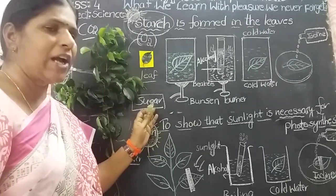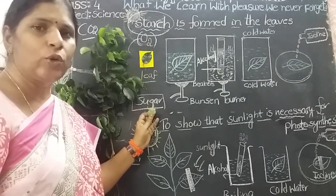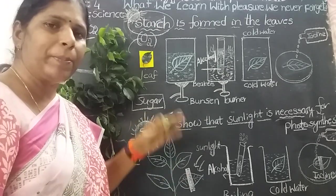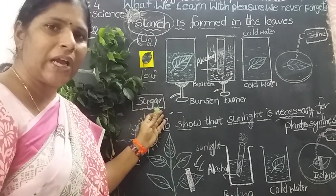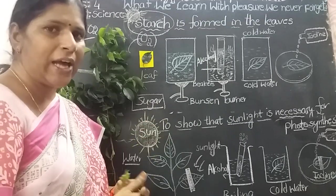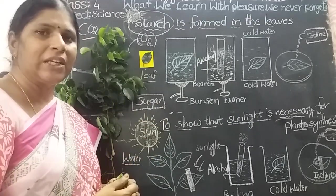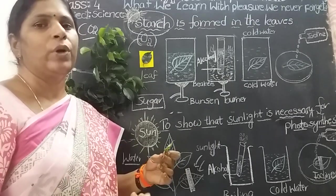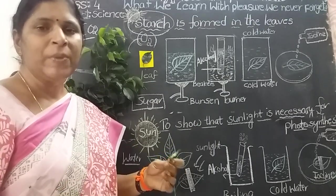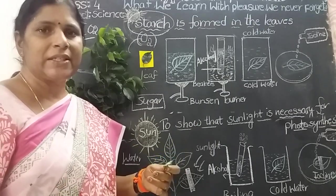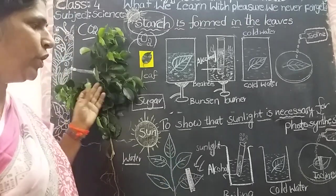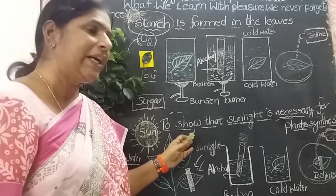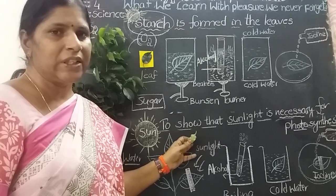Prepared food is called sugar or glucose. Extra food is starch. Starch is present in green leaves, fruits, vegetables, and some food grains. Now we showed that sunlight is also necessary for photosynthesis.